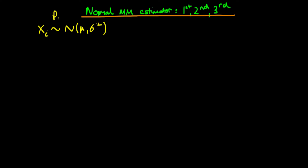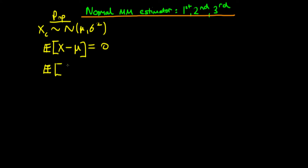In the population, we can think about there being a number of population moment conditions. The first is that the expected value of x minus mu is equal to zero — that's the first centred moment condition. The second centred moment condition is that the expectation of x minus mu all squared is equal to sigma squared.